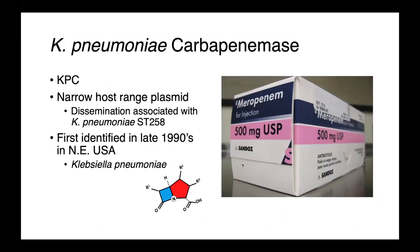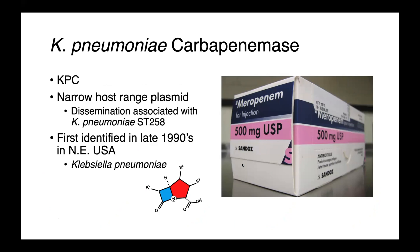The KPC enzyme — Klebsiella pneumoniae carbapenemase — is found on a narrow-host-range plasmid associated with particular strains of Klebsiella pneumoniae. It was first identified in the late 1990s in the Northeastern United States in, of course, Klebsiella pneumoniae, and from there spread globally — first to Israel and Puerto Rico, then Eastern Europe including Greece, from Israel to Colombia, and into Northern Europe and Canada. Current hotspots remain in the Northeastern United States, Colombia, the Eastern Mediterranean region including Israel and Greece, as well as Southeast China.